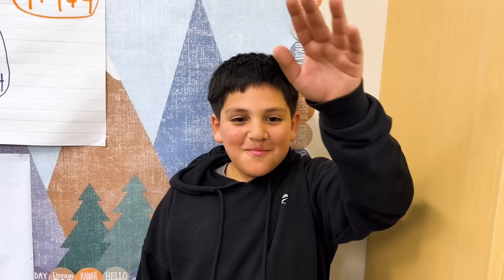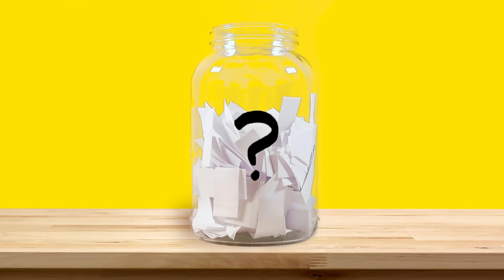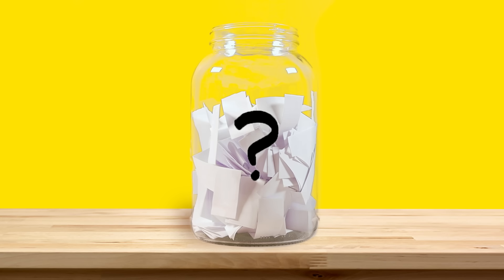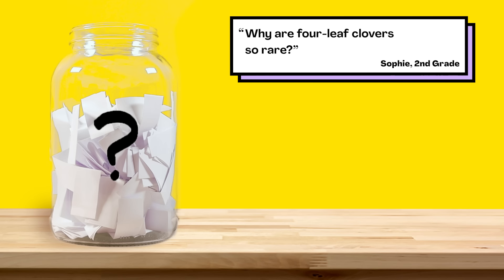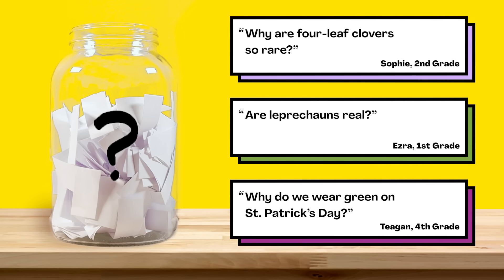That's all for this week's question. Thanks, Julio, for asking it. For the next episode, we reached into our question jar and picked out three questions we're thinking about answering next. When this video is done playing, you'll get to vote on one. You can choose from: Why are four-leaf clovers so rare? Are leprechauns real? Or why do we wear green on St. Patrick's Day? Submit your vote when the video is over — we want to hear from all of you watching. There are mysteries all around us. Stay curious and see you next week.